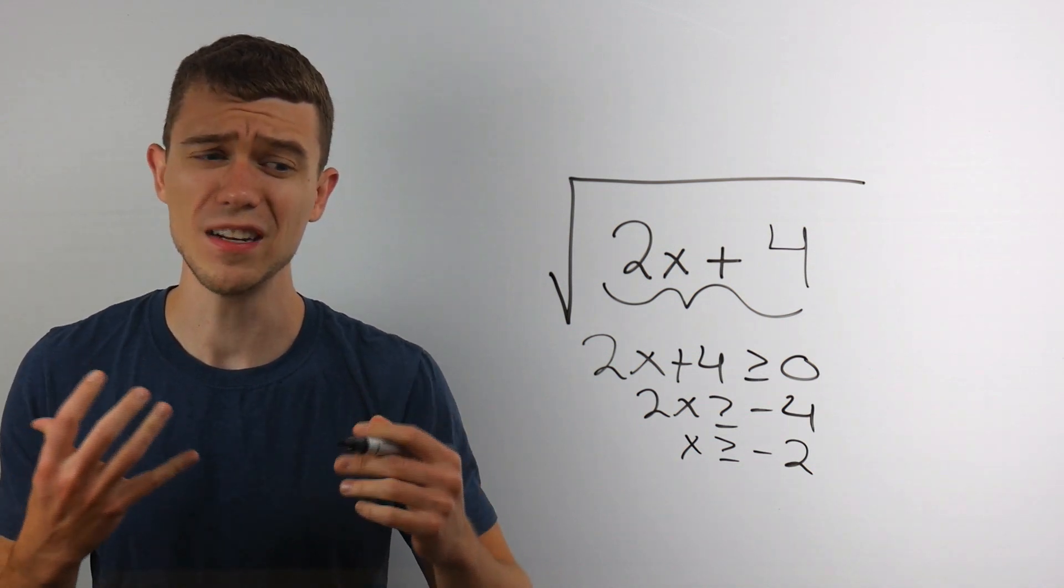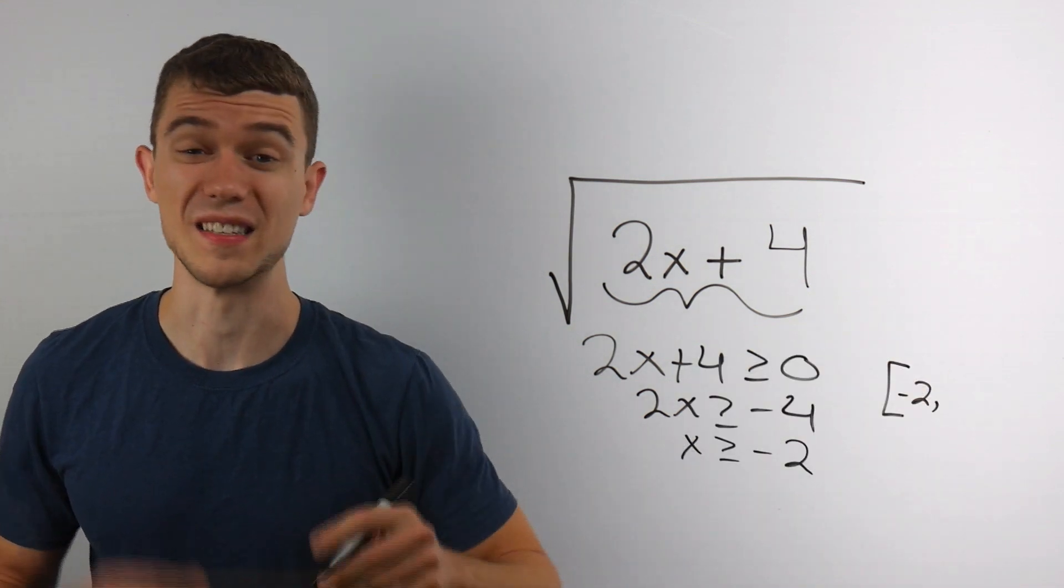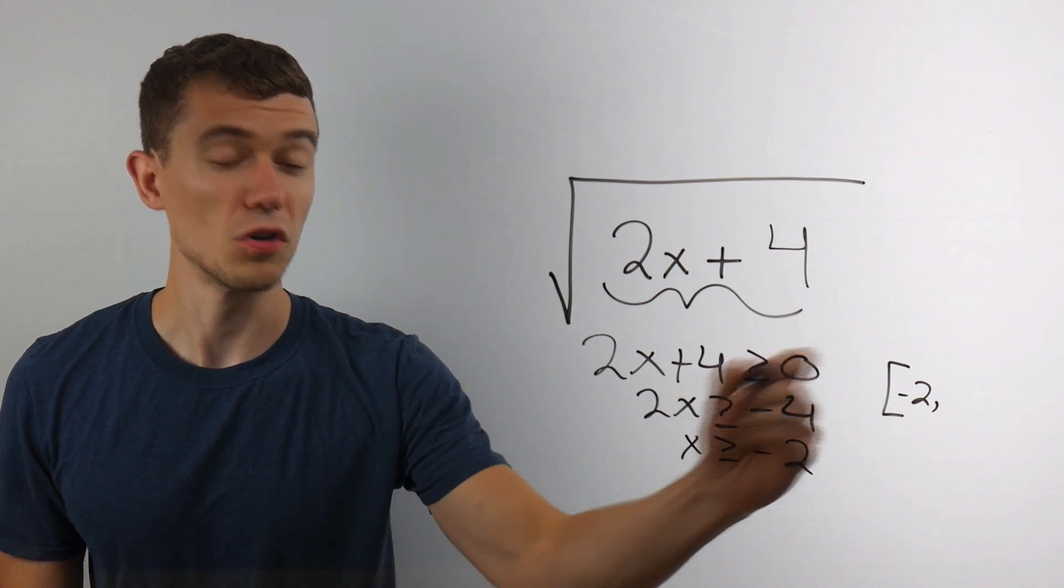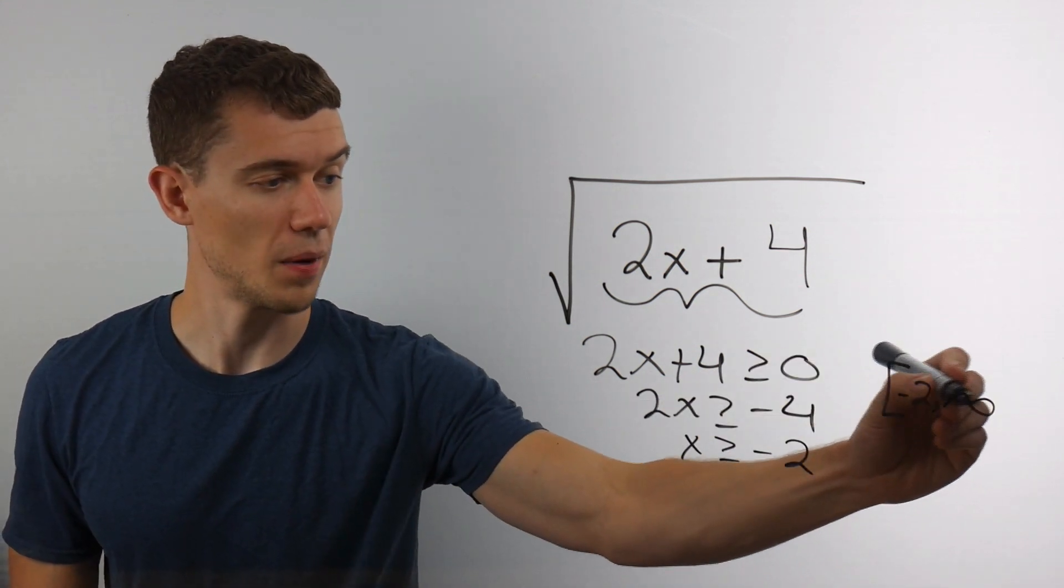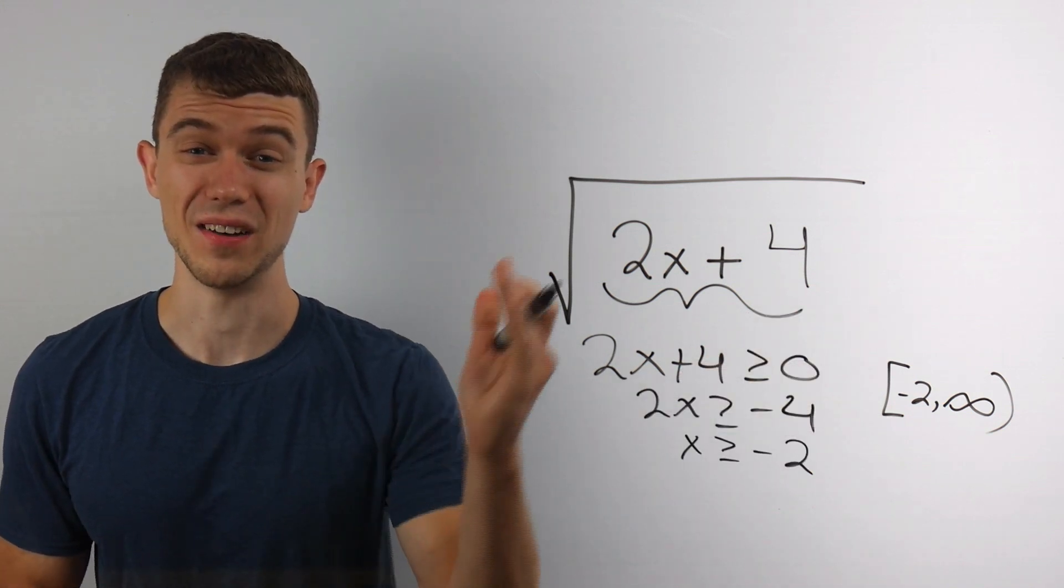If you want to write that in interval notation, you would write that as bracket negative two because it's greater than or equal to. And then it's all the numbers greater than that. So we'll go off to positive infinity parenthesis. This is the domain of this function.